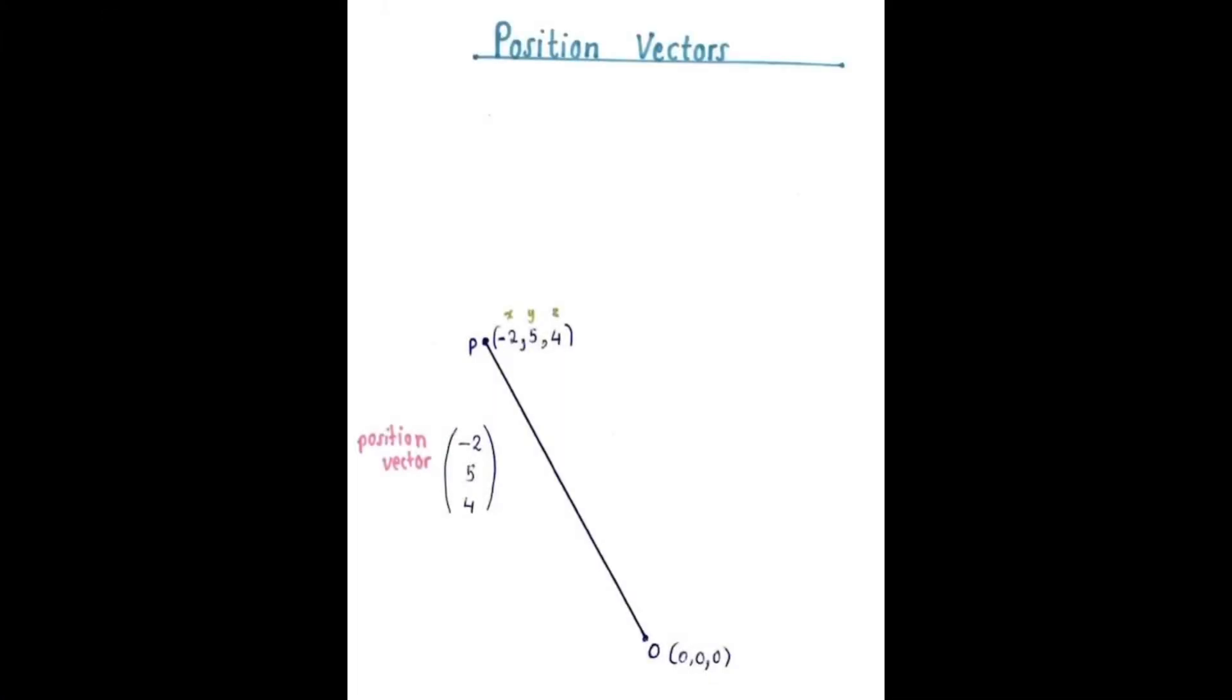We have a point in space P with x-coordinate negative 2, y-coordinate 5, and z-coordinate 4. The vector to get you from the origin here with coordinates 0, 0, 0 to the point P will be the vector negative 2, 5, 4 written here as a column.